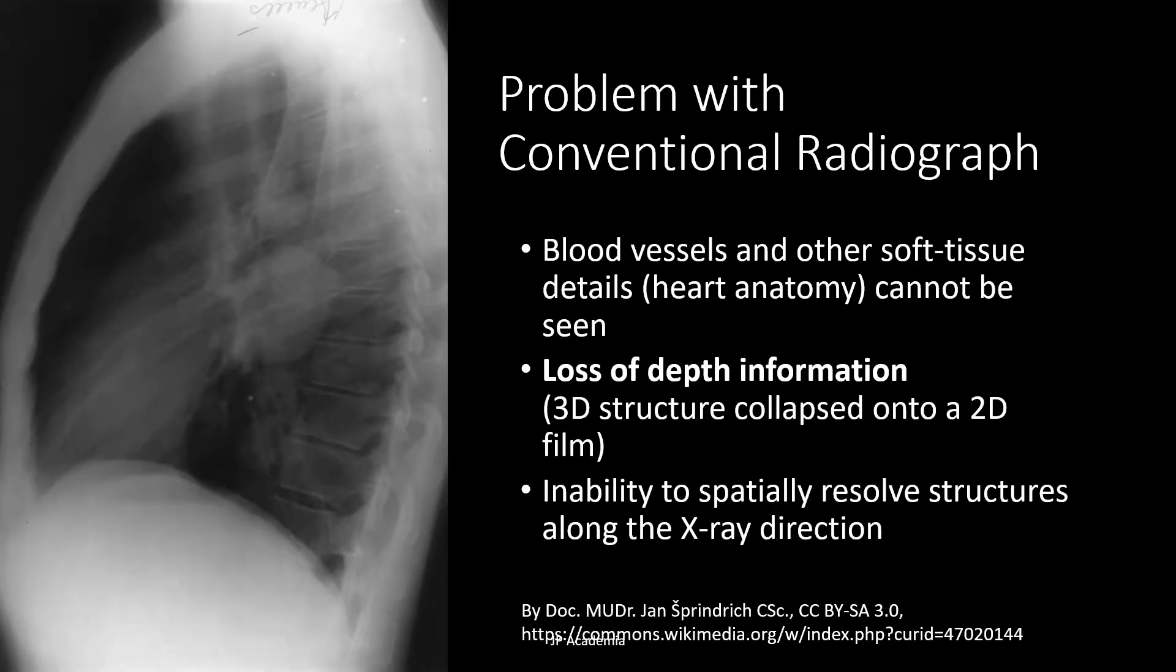We have the following problems when it comes to conventional radiography. First, blood vessels and other soft tissue details, such as the heart anatomy, cannot be seen in a radiograph. And there is a loss, therefore, of depth information because the 3D structure collapse onto a 2D film. So the conventional radiography has this inability to spatially resolve structures along the X-ray direction. And therefore, we have a need for an imaging modality capable of sectional imaging.